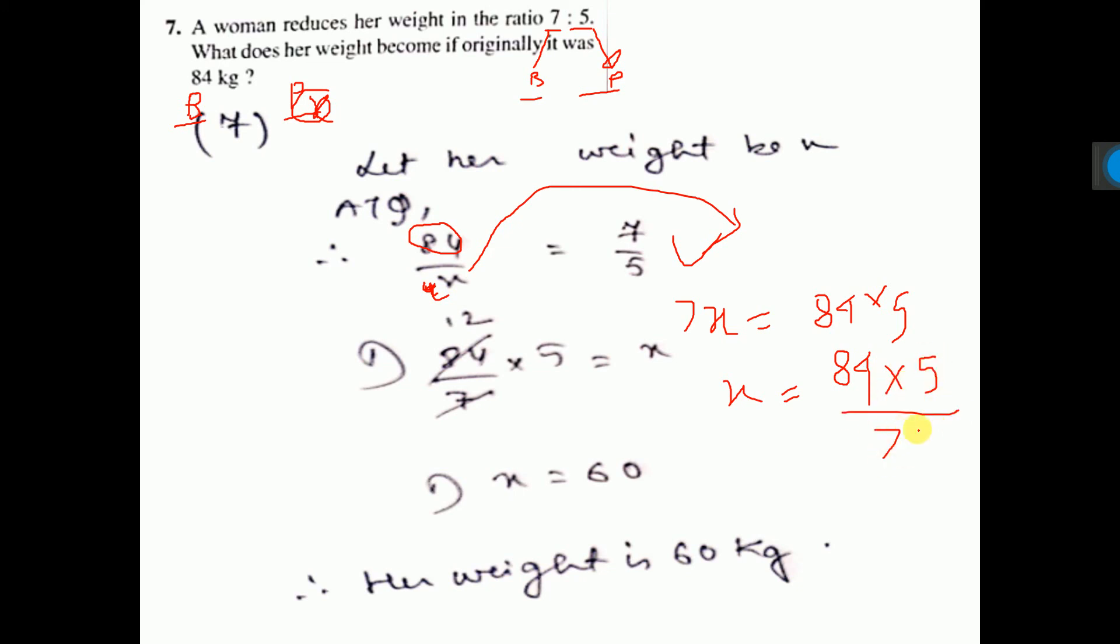So 7, 12 jar. At 12 jar, 60 kg. You can do it this way also. This way also you can do. So the weight is 60 kg.